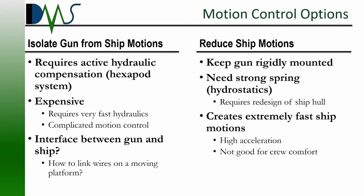Let's think about some ways we can control the motion for this gun. One option would be to isolate the gun from the ship motions — that's what we saw done with the walk-to-work vessels. That requires hydraulic compensation, it's expensive, and it requires complicated motion control. We also have to think about the interface between the gun and the ship. Generally, this gun is going to require some form of electricity or hydraulic power from the ship. How do we get those wires to go between the ship and the gun, knowing that these two are now moving relative to each other? That's not an easy thing to work out.